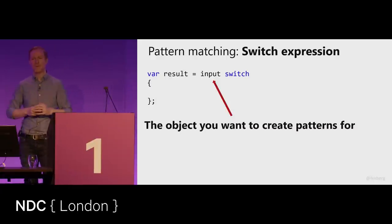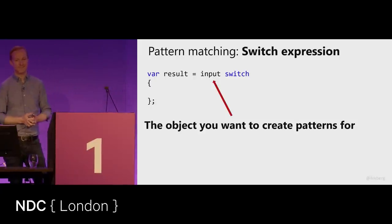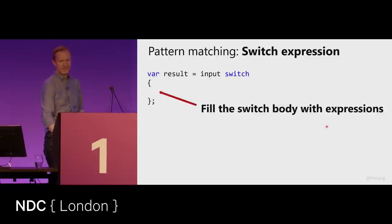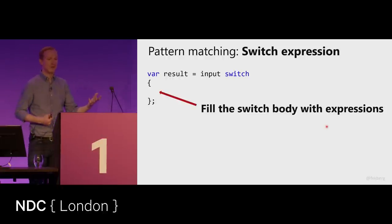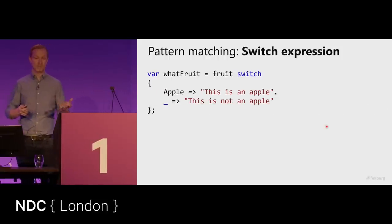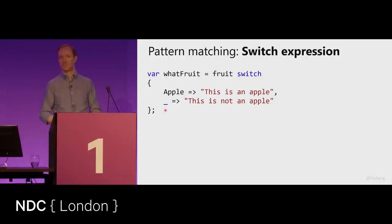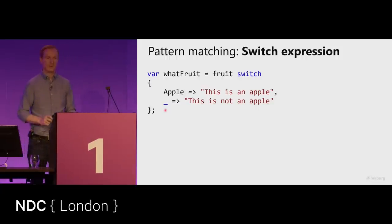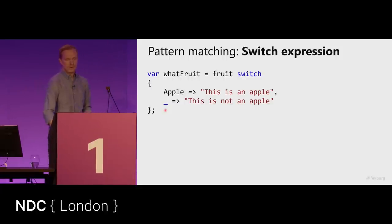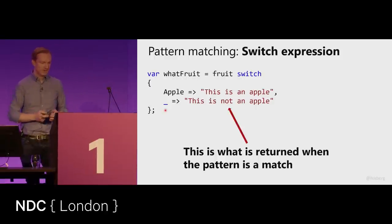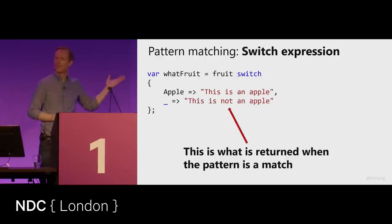Then switch expressions were introduced — a new way of looking at an object. We say 'I want to get a result based on what this object is' and create patterns to determine that. The input could be anything, and the switch block contains expressions. For example, if the fruit is an Apple, return 'this is an apple'; for everything else, use the discard pattern (_). The discard matches on nulls and anything not of a particular type. It's much more tidy, and we'll see how it's more powerful than just returning strings.